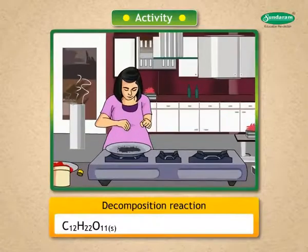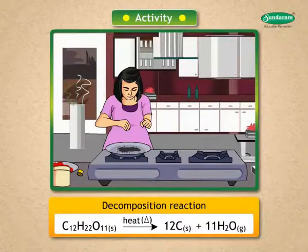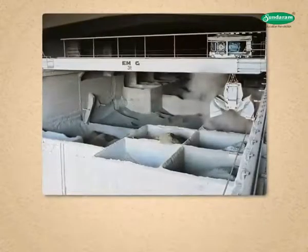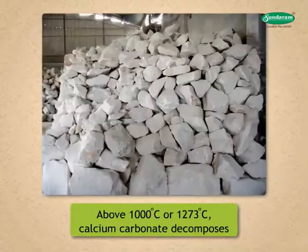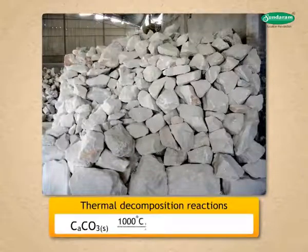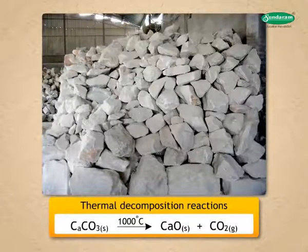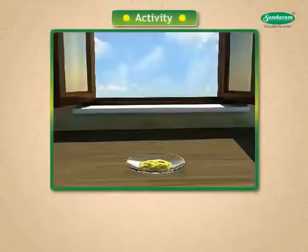C₁₂H₂₂O₁₁(s) when heated gives 12C(s) + 11H₂O(g). Such reactions are decomposition reactions. During industrial manufacturing of cement at a temperature above 1000°C (1273 K), calcium carbonate decomposes as follows: CaCO₃(s) → CaO(s) + CO₂(g). These reactions are decomposition reactions carried out by heating, also known as thermal decomposition reactions.